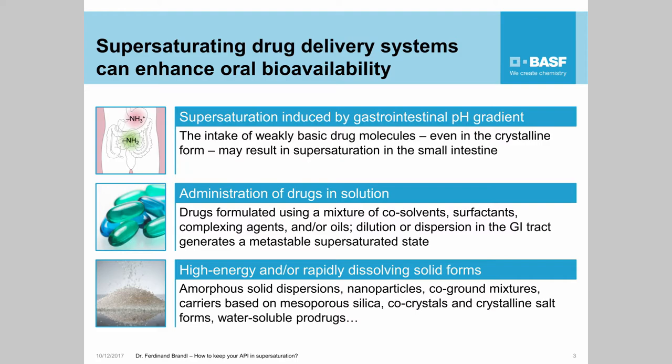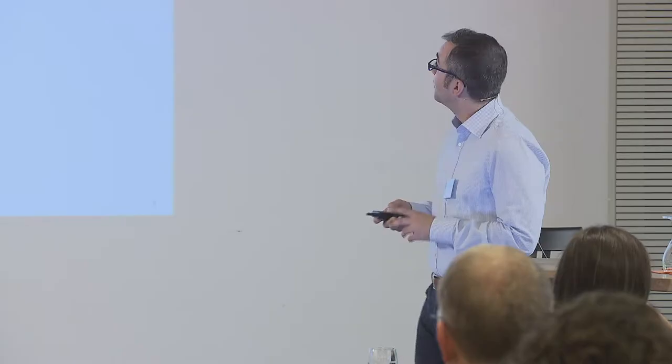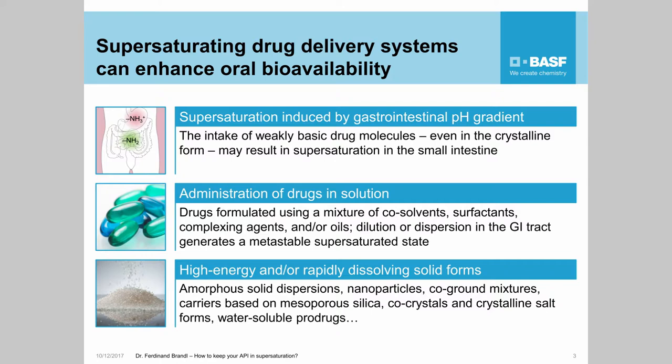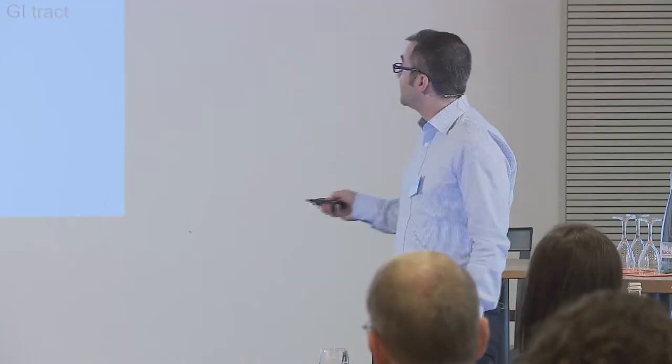One principle that has already been mentioned is supersaturation induced by the gastrointestinal pH gradient. If we administer a weakly basic drug molecule, even in crystalline form, this may result in supersaturation in the small intestine. That's because the solubility of basic drugs is much higher at acidic pH than at neutral pH, and this gastrointestinal pH gradient is responsible for supersaturation in the small intestine.